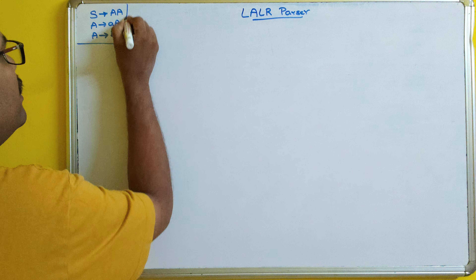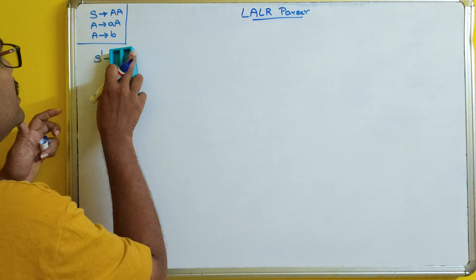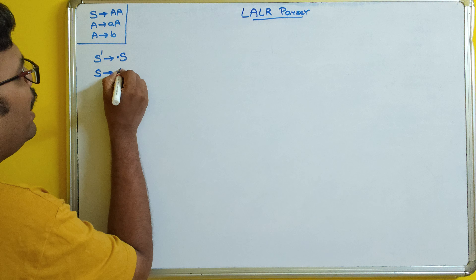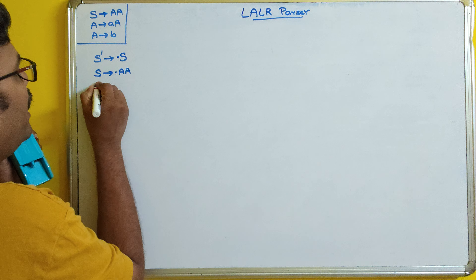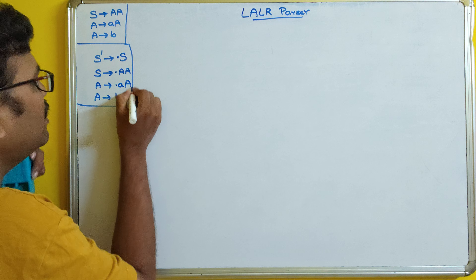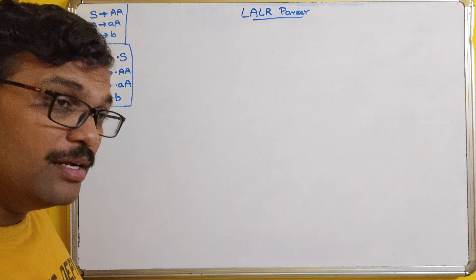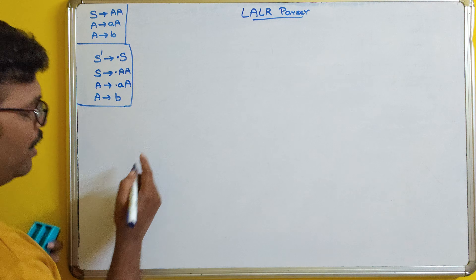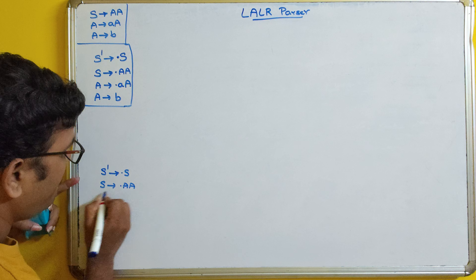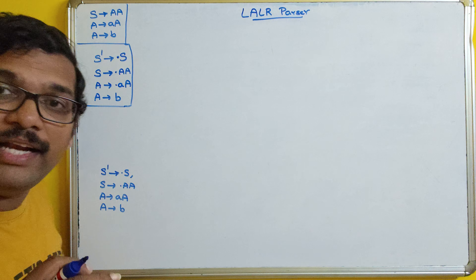The first step is augmented grammar. So S' → .S. If it is dot S, we need to write down the productions of S also: S → .aA, A → .aA, and A → .b. This is the augmented grammar. Now we have to calculate the LR(1) items — that means LR(0) along with the look-ahead symbols. For the initial state I0, the look-ahead symbol will be dollar for S' → .S. To find look-ahead for S → .aA, we compute FIRST of what follows, giving dollar. For A → .aA, the look-ahead is a or b.